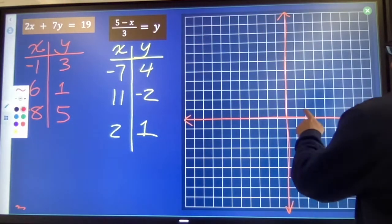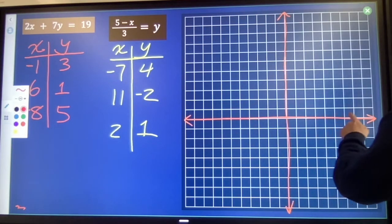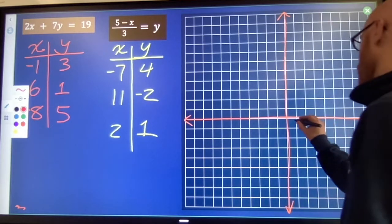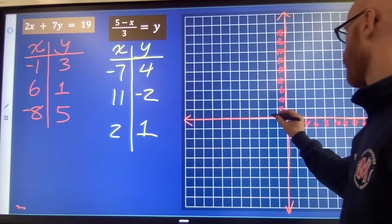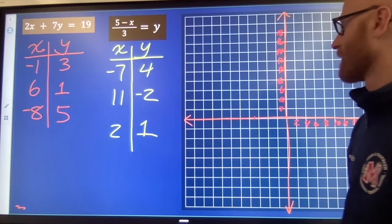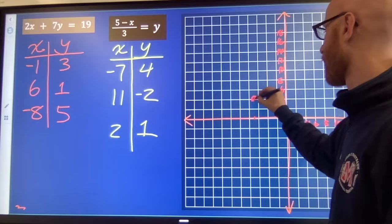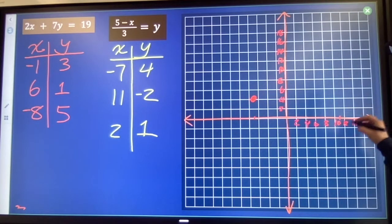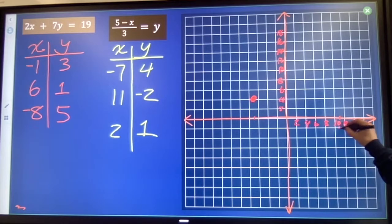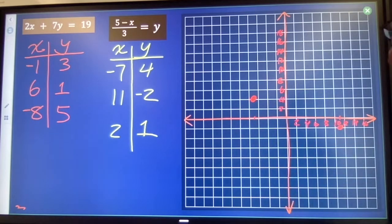I need to get up to x is 11, so I might count by twos. We've got negative 7 comma 4, 3 comma 6, 6 comma 1, 11 comma negative 2, and 2 comma 1.